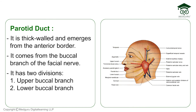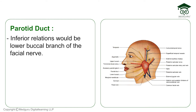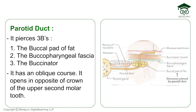The parotid duct is thick-walled and emerges from the anterior border. It runs between the upper and lower buccal branches of the facial nerve; its superior relation is the upper buccal branch, transverse facial vessels, and sometimes the accessory parotid gland, while its inferior relation is the lower buccal branch. After exiting, the duct pierces three B's: the buccal pad of fat, buccopharyngeal fascia, and buccinator — with an oblique course — and opens opposite the crown of the upper second molar tooth.